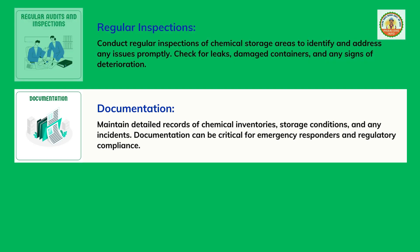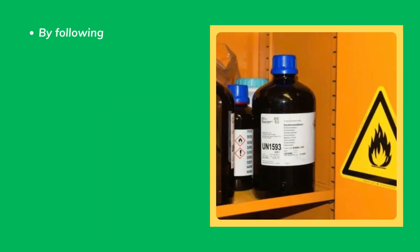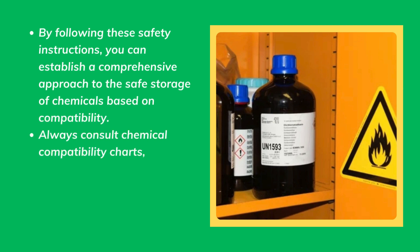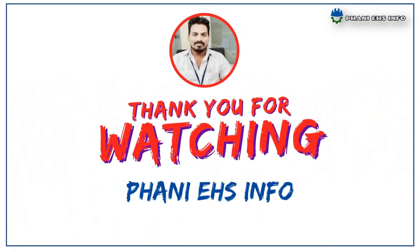Employee Training: Train personnel on the proper storage and handling of chemicals based on compatibility. Provide education on the risks associated with incompatible substances and the importance of following storage guidelines. By following these safety instructions, you can establish a comprehensive approach to safe chemical storage. Always consult chemical compatibility charts, industry standards, and regulatory guidelines for specific information related to the chemicals in your facility.